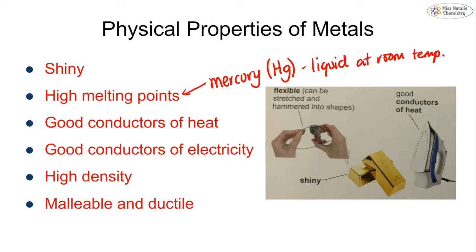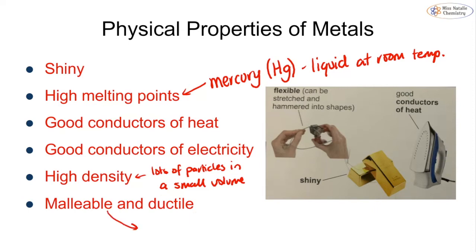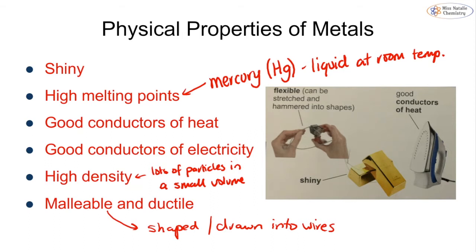Metals tend to be very good conductors of heat and electricity, although some are better than others. They have a high density, meaning they have lots of mass in a small volume. They also tend to be malleable and ductile, meaning they can be shaped or drawn into wires. We can take a metal and hammer it into different shapes, which is why car bodies can all be made from the same basic metal but have different shapes — we take advantage of malleability to shape the metal as needed.